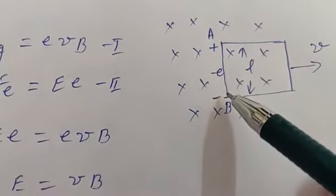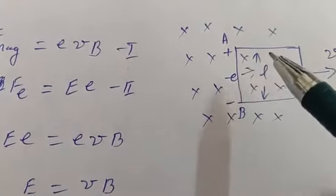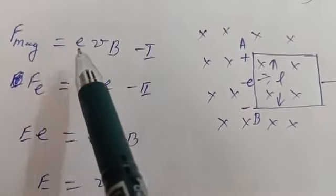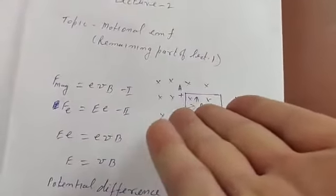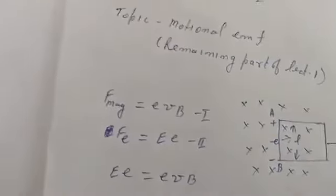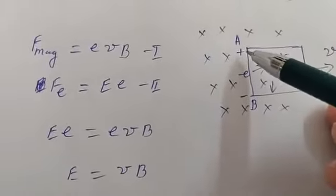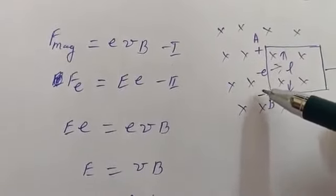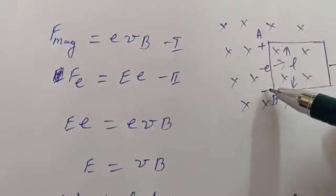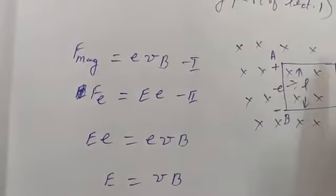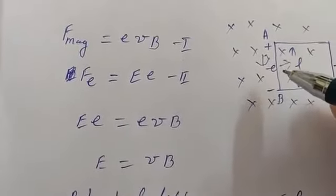On this side there are electrons, and this side is moving in this direction. So electrons are experiencing a magnetic force. The magnetic force is given by eVB. For positive charge the direction will be upward, but these are electrons, so the direction will be downward. So the lower end will be negatively charged and the upper one will be positively charged. Due to this redistribution of charge, electrons come in the downward direction, so there will be an excess of electrons on one side and a deficiency on the other. So an electric field will be set up between these two, and the direction of the electric field will be from positive to negative.